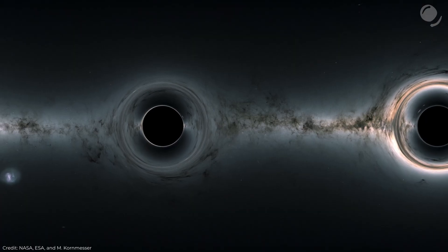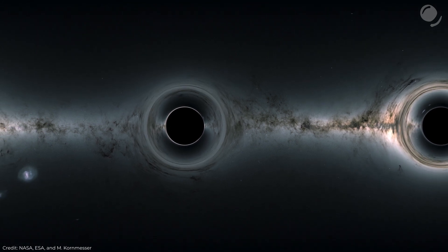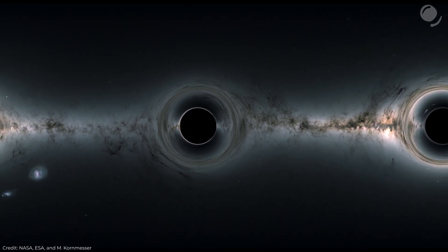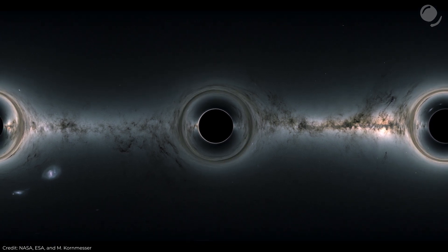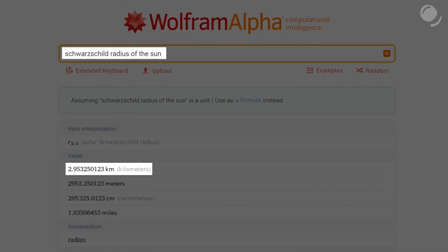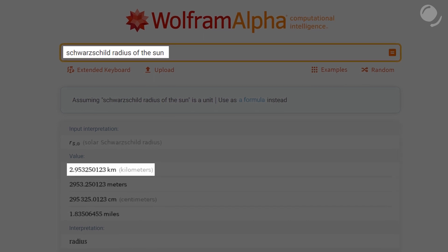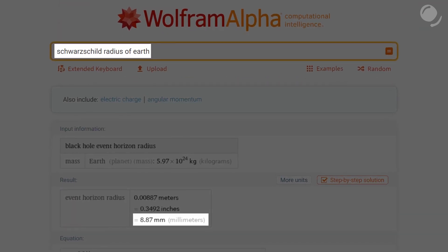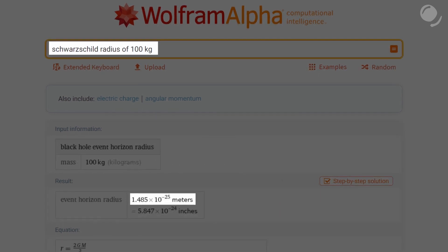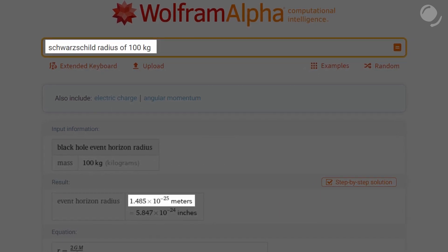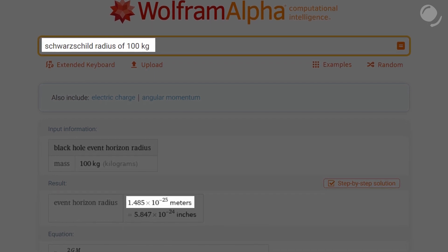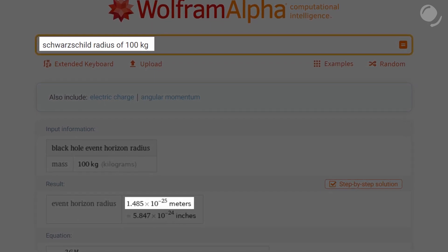For example, you can use Wolfram to calculate how much you would need to squeeze an object of a certain mass. Or what is Schwarzschild radius or gravitational radius? Basically, a distance at which you would find an event horizon. That's what is often referred to as the size of a black hole. For the Sun, it's about 3 kilometers or a little less than 2 miles. For Earth, it's less than a centimeter or less than a half an inch. And for an object with a mass of 100 kg, it is 1.485 times 10 to the minus 25 meters, which is a lot smaller than a proton. We obviously don't have means to create actual black holes in this way.